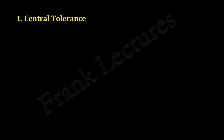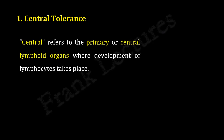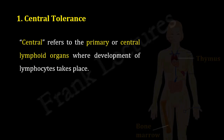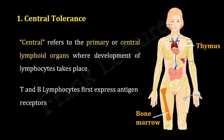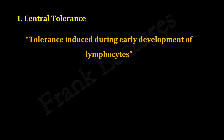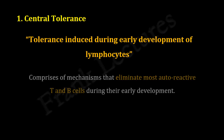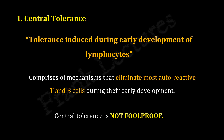Central tolerance: here the term 'central' refers to the primary or central lymphoid organs where development of lymphocytes takes place — namely the bone marrow and the thymus. These are the sites where T and B lymphocytes express their antigen receptors, and these organs provide the growth factors and other molecular signals for lymphocyte maturation. Central tolerance is the tolerance induced during early development of lymphocytes. The mechanisms and processes of central tolerance eliminate most auto-reactive B and T cells during their early development. But central tolerance is not foolproof, which is where the role of peripheral tolerance comes into play.